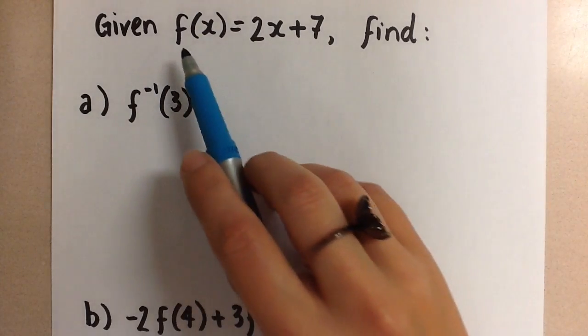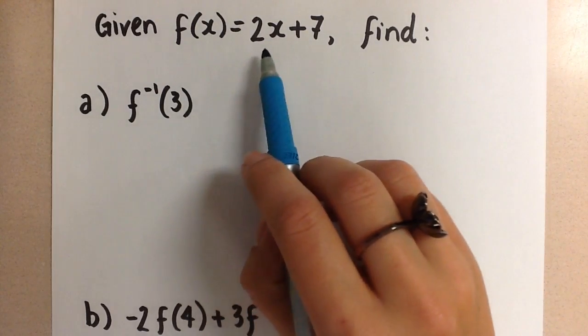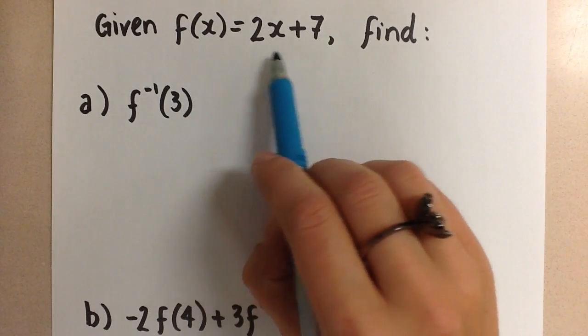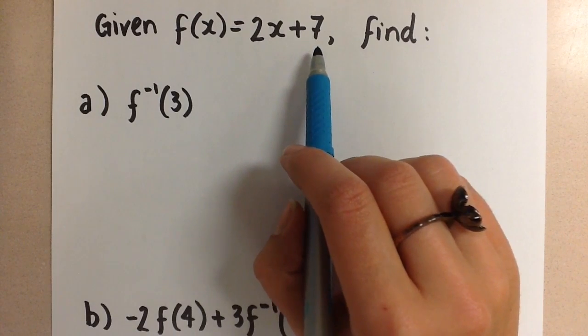We have an equation here, f(x) equals 2x plus 7. We know this is a linear equation, so it's going to be a line when we graph it.